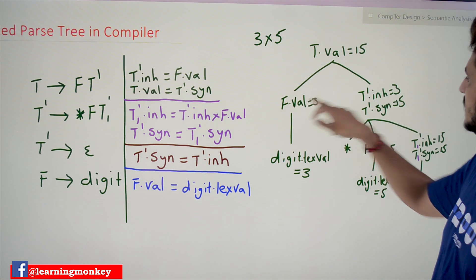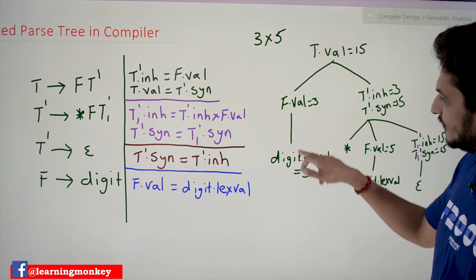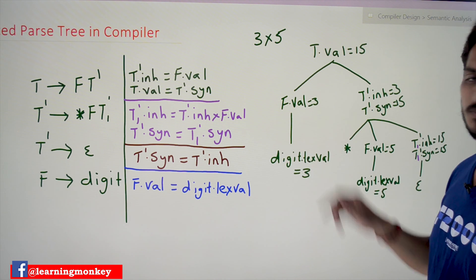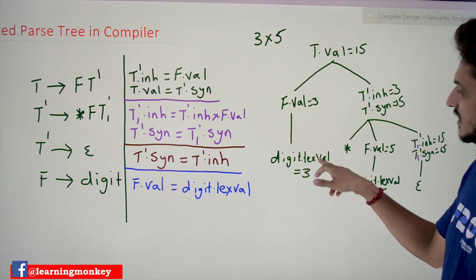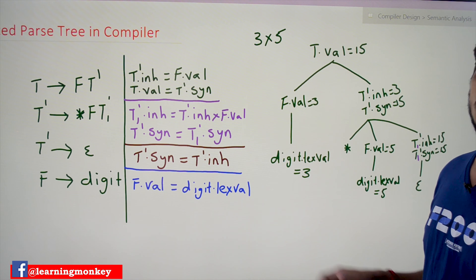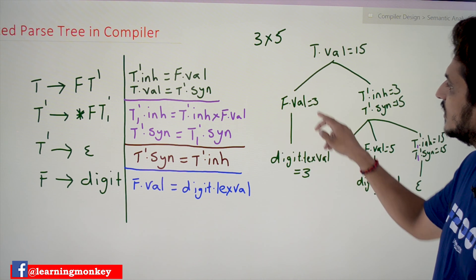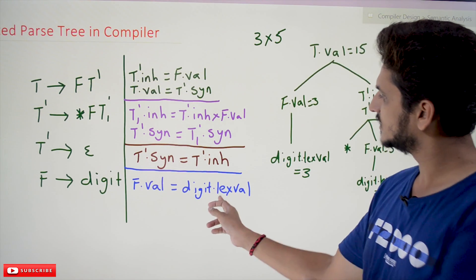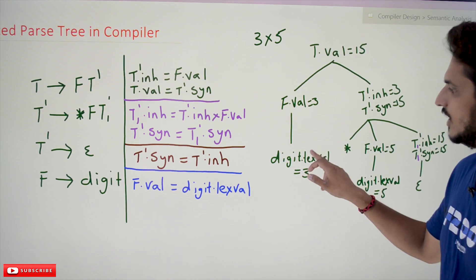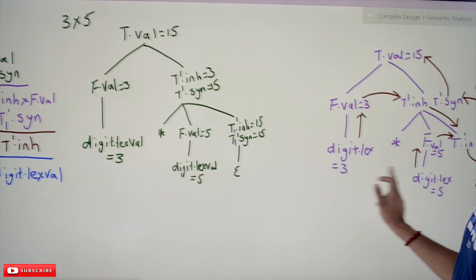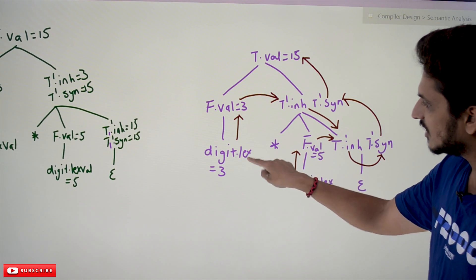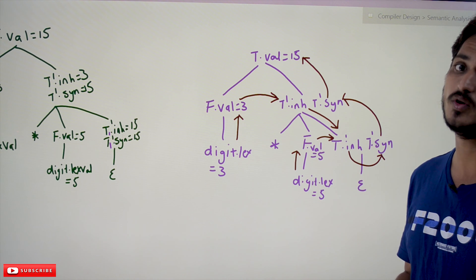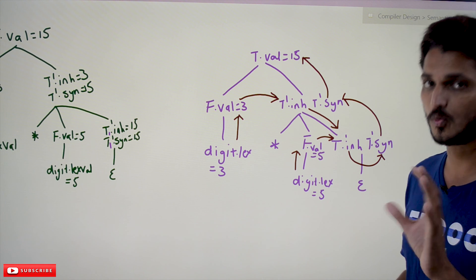T.value is evaluated first, then F is evaluated and expanded. After expanding, the digit is identified — the digit value 3 is identified, and digit.lex_value = 3 is given to F.val. So whenever F is executed, digit.lex_value is given to F.val. This is shown in the dependency graph: digit.lex_value is given to F.val, which is why an arrow mark is shown going upward.